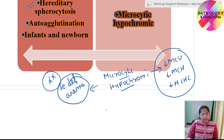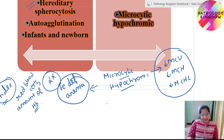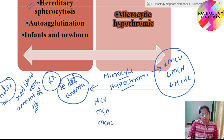In today's lecture we covered RBC indices. The most important RBC indices are MCV, MCH, and MCHC. MCV is mean corpuscular volume (unit: femtoliters), MCH is mean corpuscular hemoglobin (unit: picograms), and MCHC is mean corpuscular hemoglobin concentration (unit: gram per deciliter or percentage).